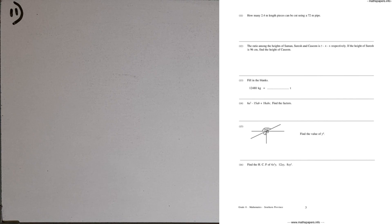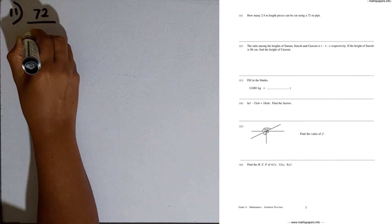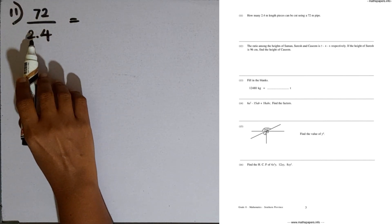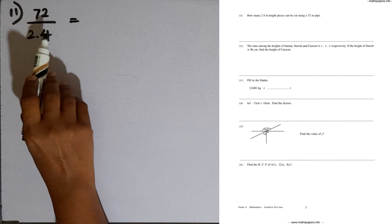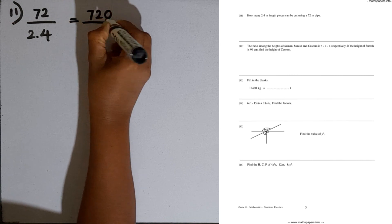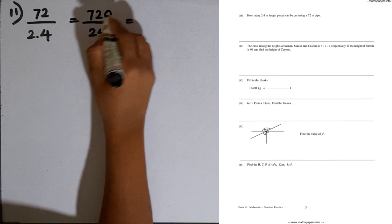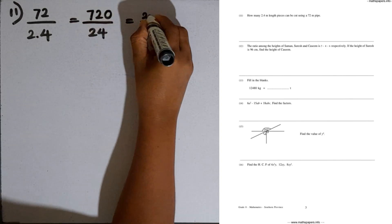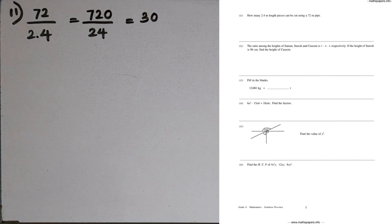Question number 11: how many 2.4 meter length pieces can be cut from a 72 meter pipe? We divide 72 by 2.4. To convert 2.4 into a whole number, multiply by 10. Then 72 must also be multiplied by 10, giving 720 over 24. For 72 we have 3 twenty-fours, and adding another zero gives us 30. So we can cut 30 pieces from this pipe.